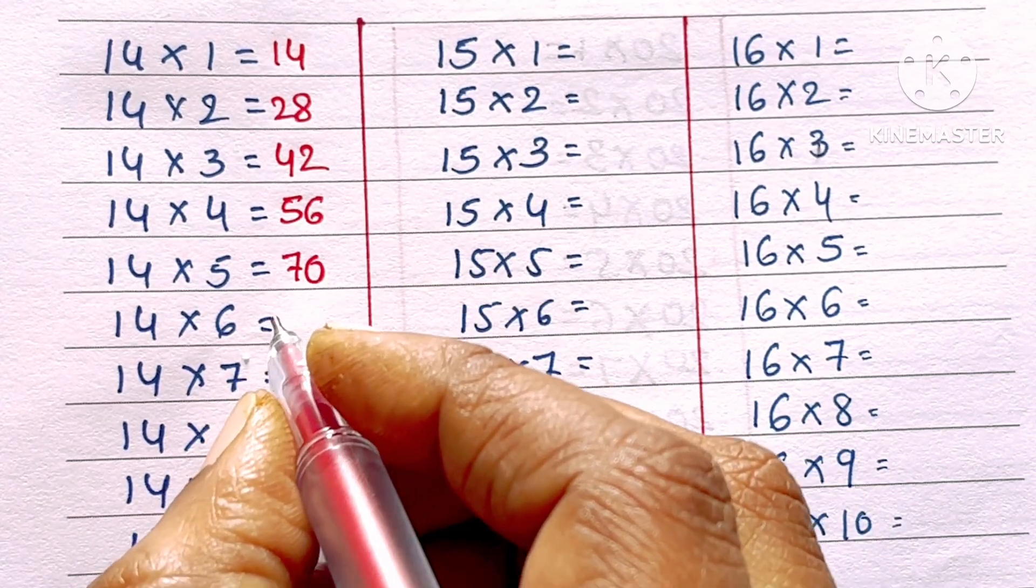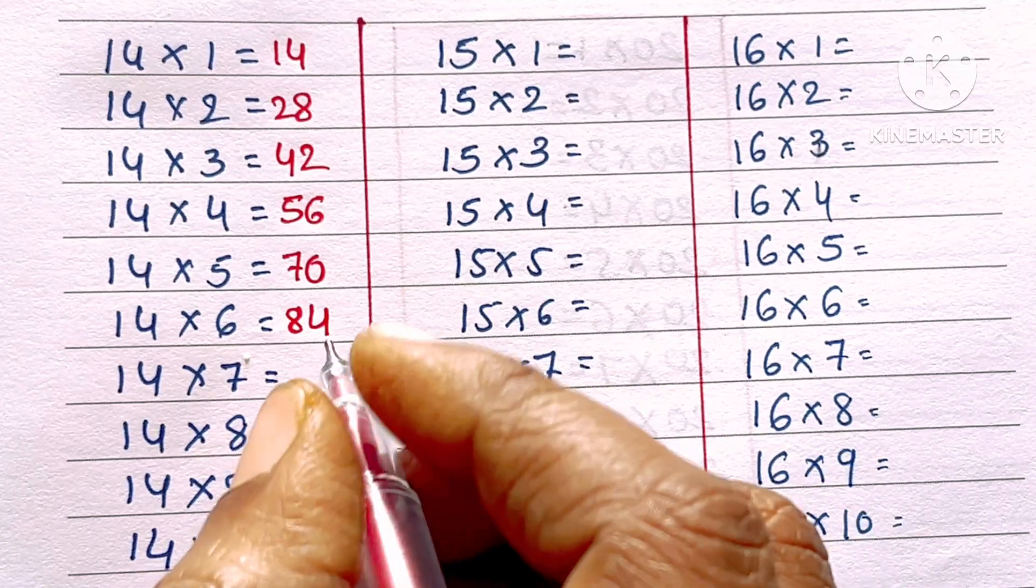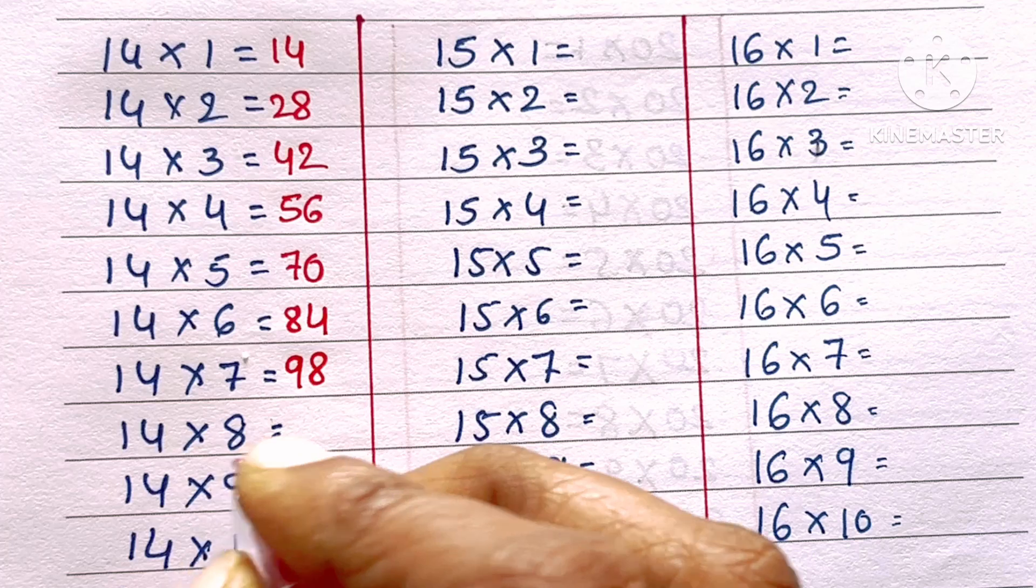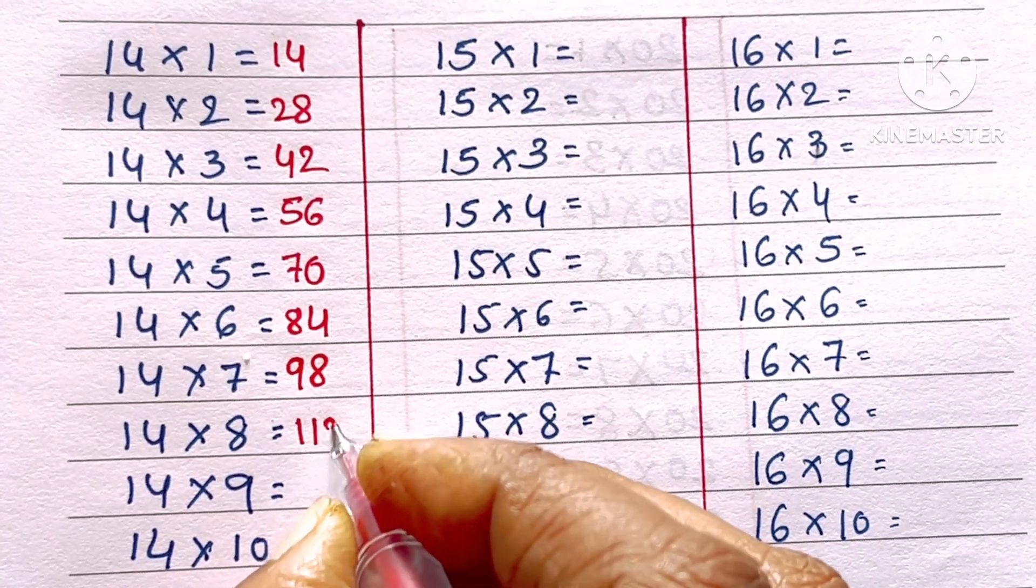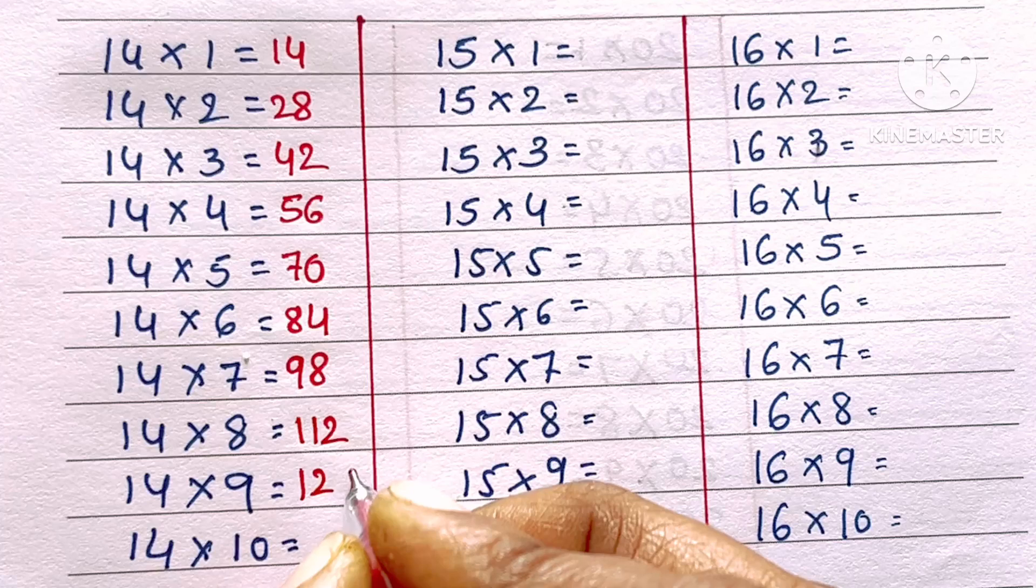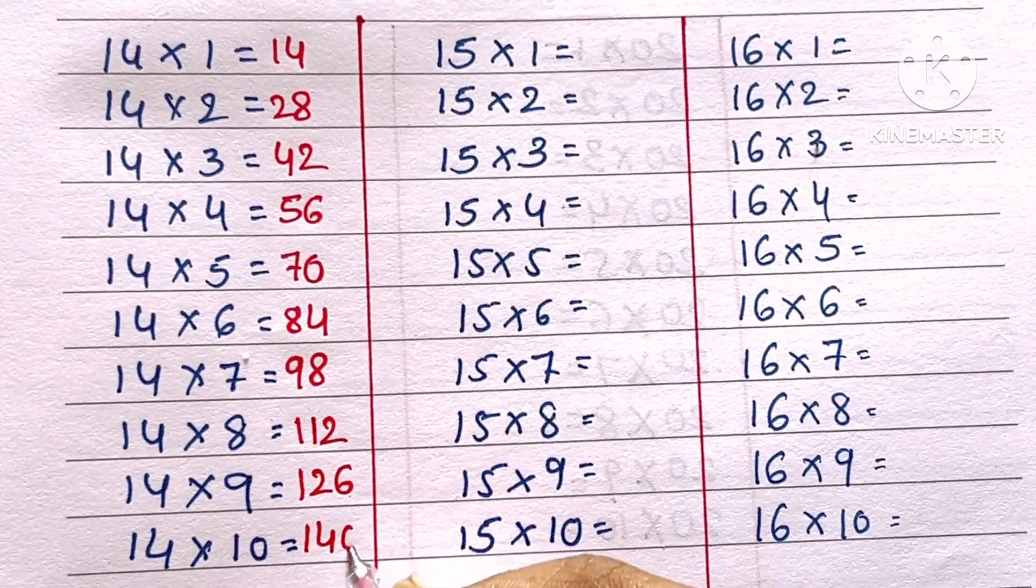14 sixes are 84, 14 sevens are 98, 14 eights are 112, 14 nines are 126, 14 tens are 140.